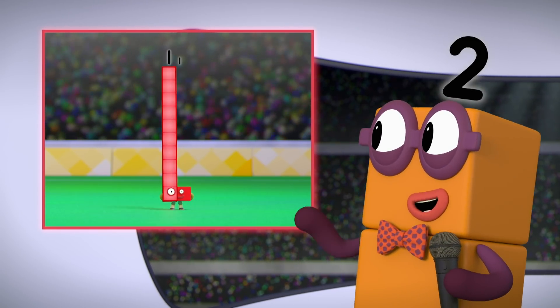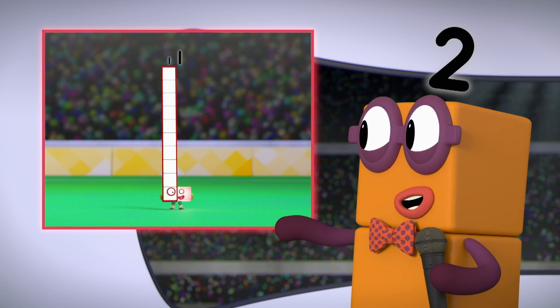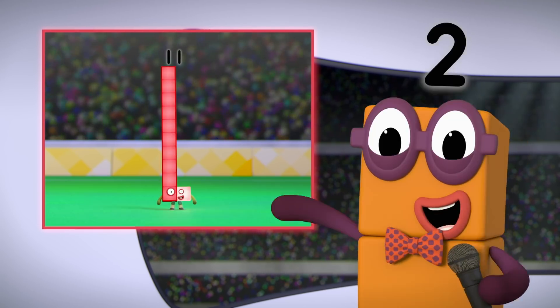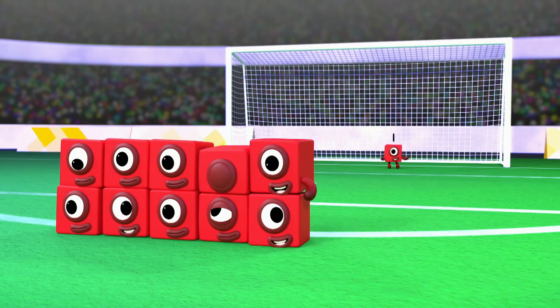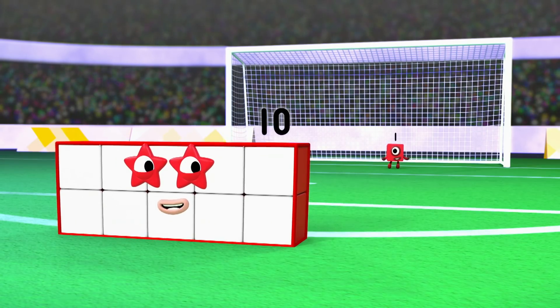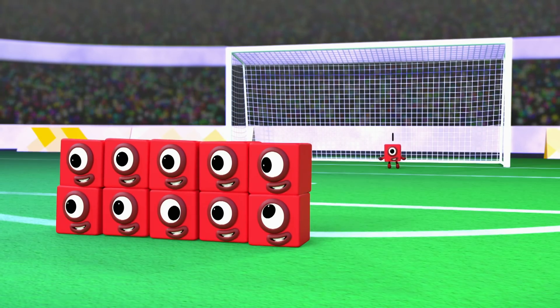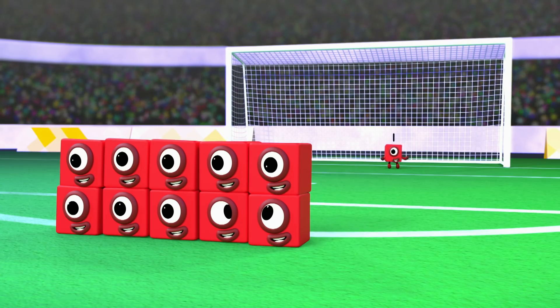Hear, Numberlings! They're standing for one. 10 blocks and one block more. 10 and one making 11. The defending team wouldn't. United get to make a wall. 1, 10, 10 ones and one more in goal is 11 ones.